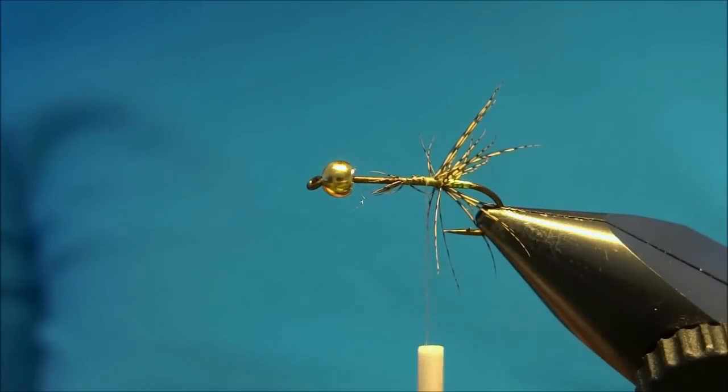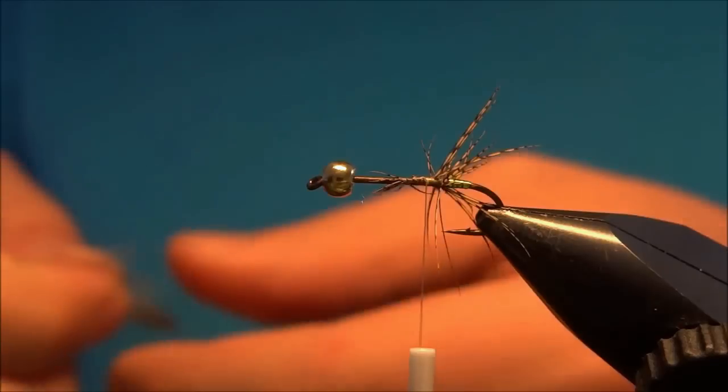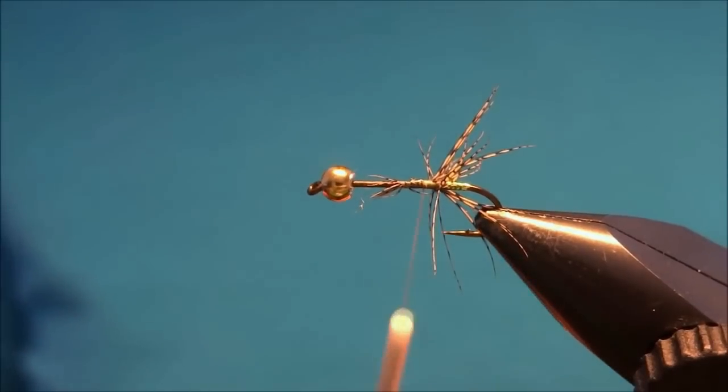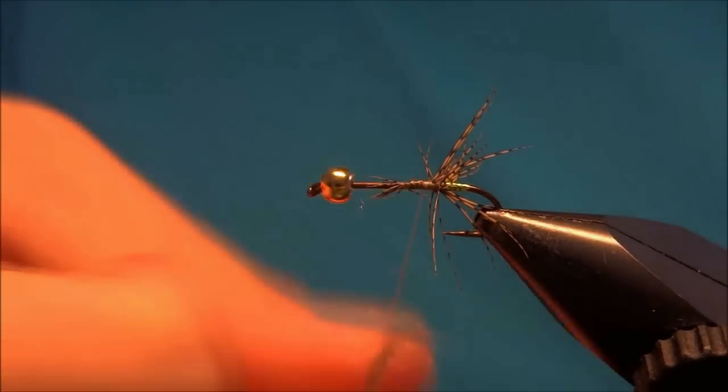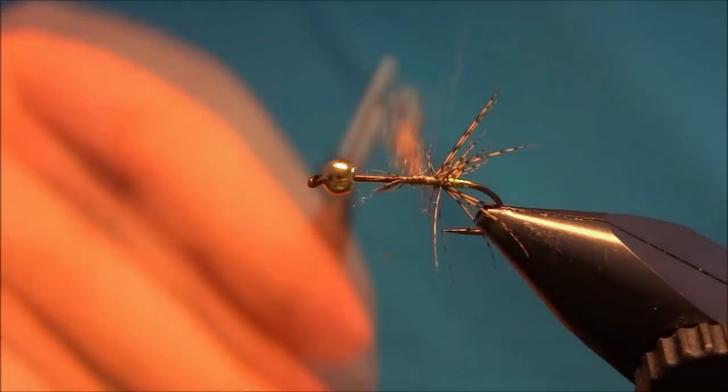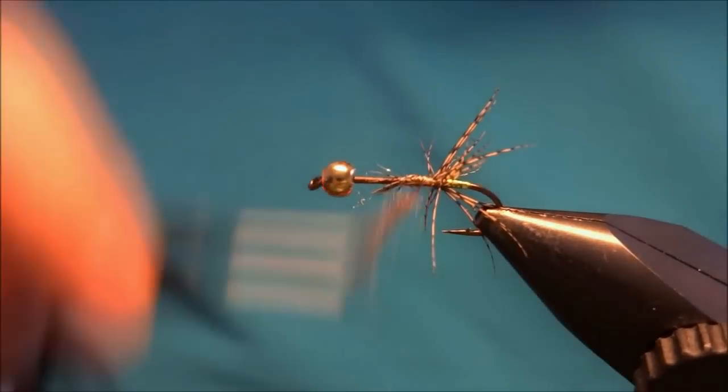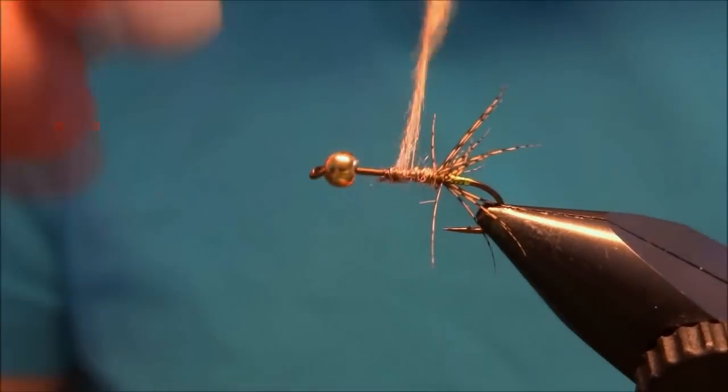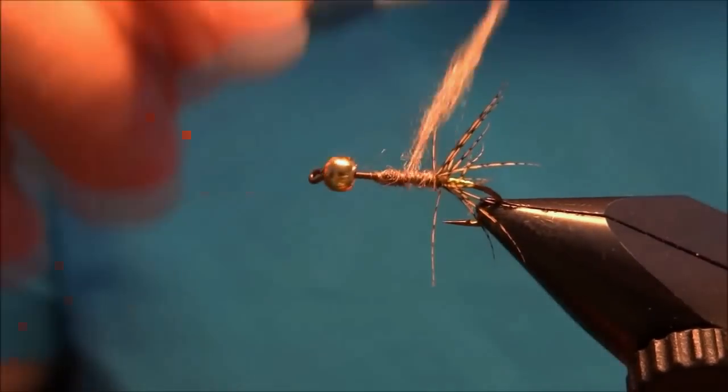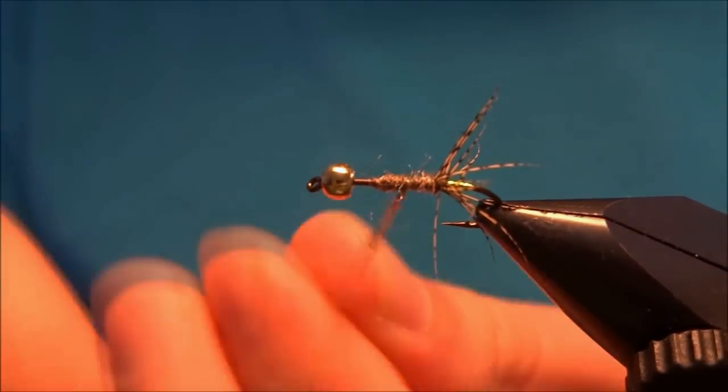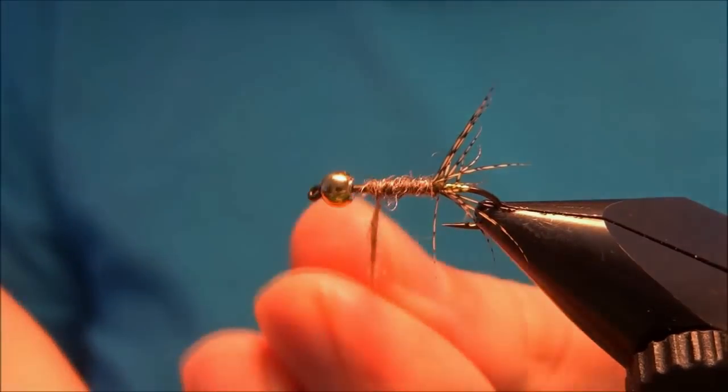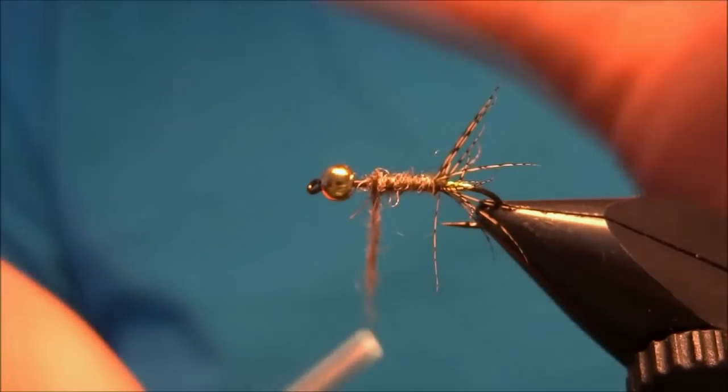For the body, I'll use some squirrel blend. It has a nice color with longer fibers planted into it, making a nice body. You don't have to put on too much. It's quite a slender fly, so the body should be quite straight and not in a cone shape.